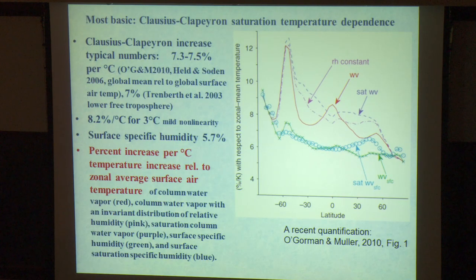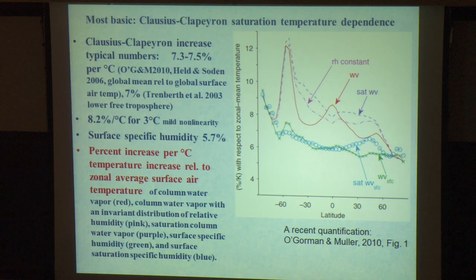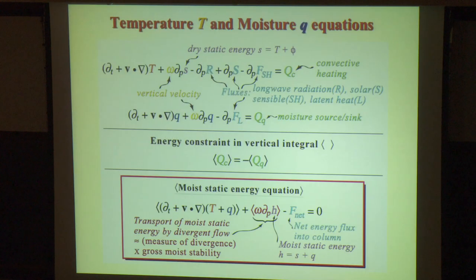Let's start with something relatively simple: the Clausius-Clapeyron equation, as quantified in a paper by O'Gorman and Müller. The rule of thumb is a 7-ish percent increase in moisture per degree Celsius of warming, globally or tropically or tropospherically integrated. If you assume constant relative humidity, you get some latitude dependence, with the canonical 7% number, some reductions in the subtropics, and some increases in regions of strong moisture convergence. That's often used as a rule of thumb.